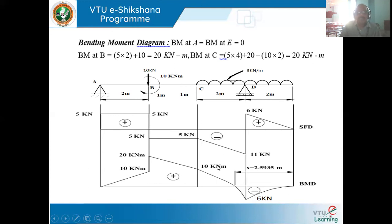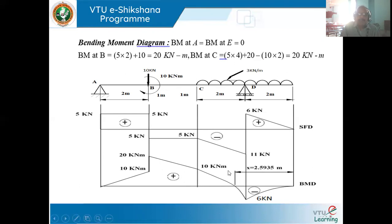After completing the bending moment diagram, we need to locate the point of contraflexure. We can approach from either end. Let x be the distance measured from support D. Taking moments about that point and equating the bending moment expression to zero, we solve for x. The value obtained is x equals 2.5934 meter.